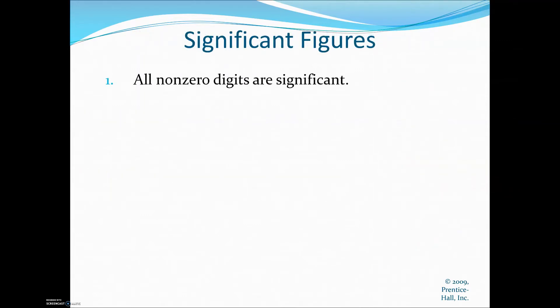The first set of rules are the rules of zero. The first rule says that all non-zero digits are significant. If you have a number like 101, the two ones are going to count, but we don't know what to do with the zero yet — that comes in the next rule. If you have a number like 111, that is three sig figs. If you have the number five, that's one sig fig. All you have to do is count your non-zero digits.